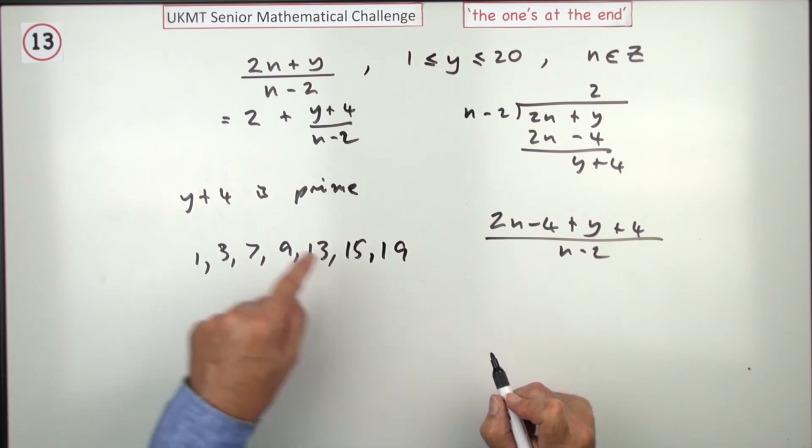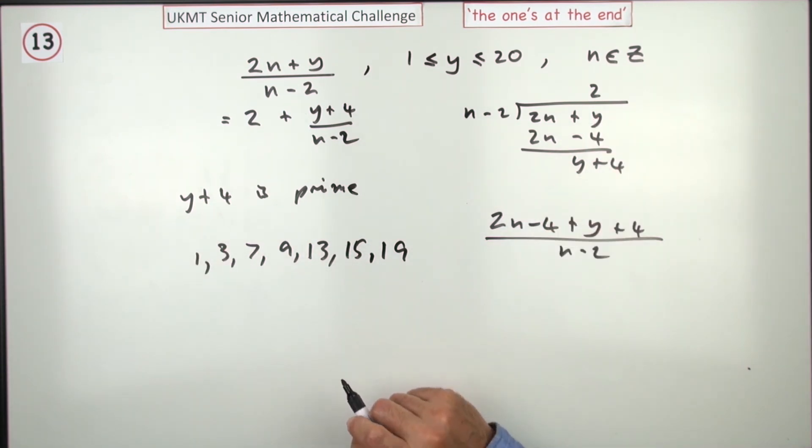So those are the ones. Those are the ones where if you add 4 onto them, they'll give you a prime number in this range. So adding that up, you've got 3, 6, 7. There's 7 of them, so that's answer B.